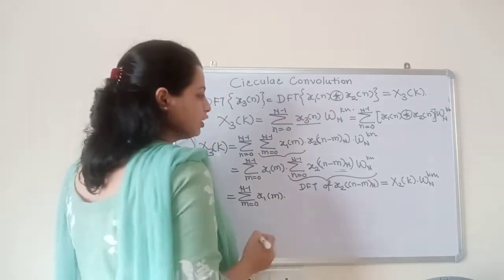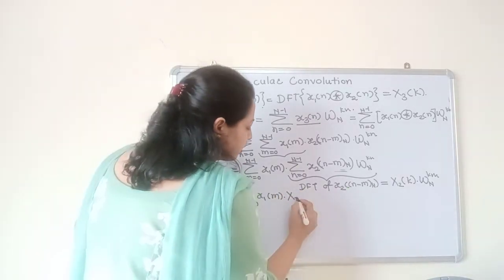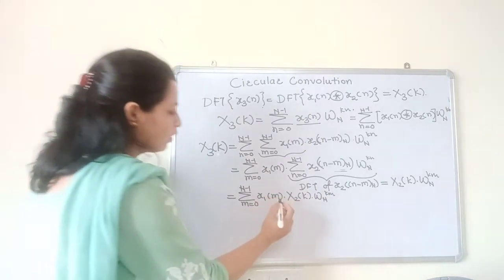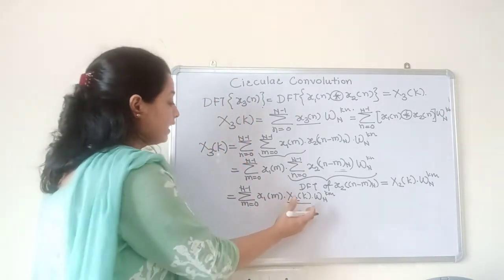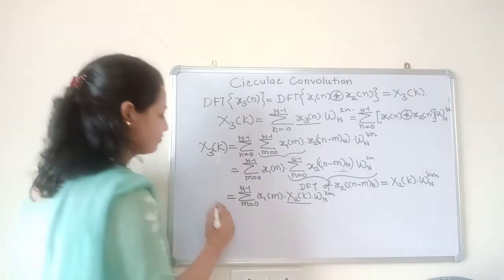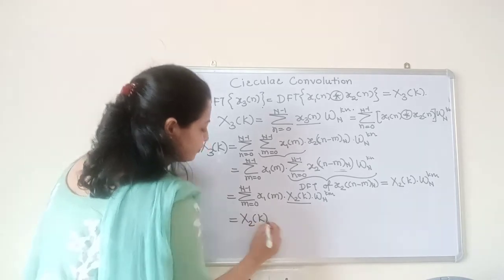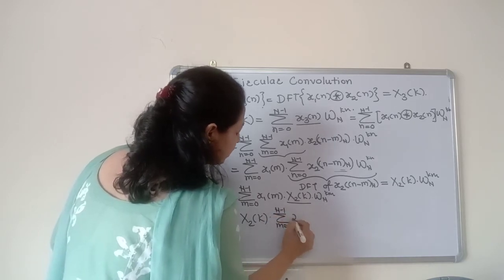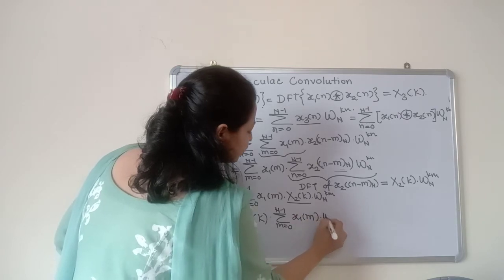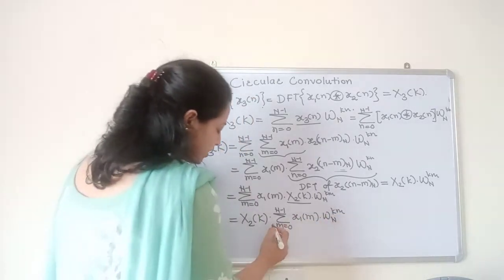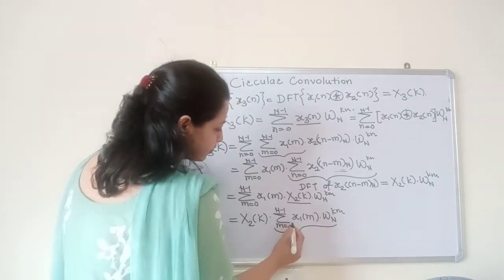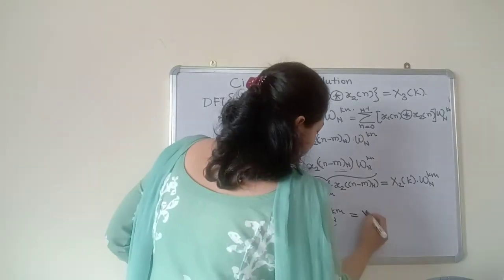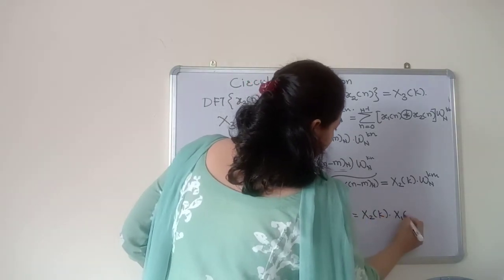Substituting this back, we get the summation m varying from 0 to N minus 1 of x1 of m into X2 of k into omega N raised to km. Now X2 of k is free from m, so we can take it outside the summation. This gives X2 of k times the summation m varying from 0 to N minus 1 of x1 of m into omega N raised to km. This inner summation is the DFT of x1 of m, which equals X1 of k.